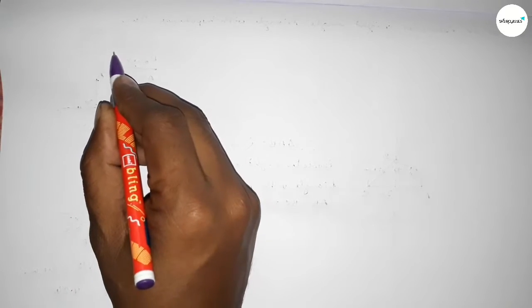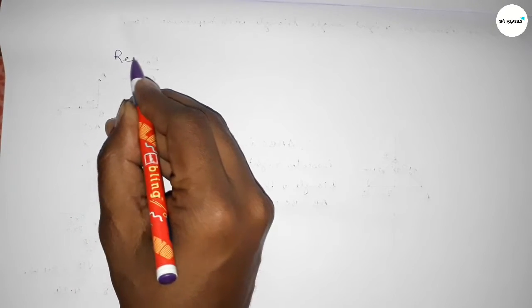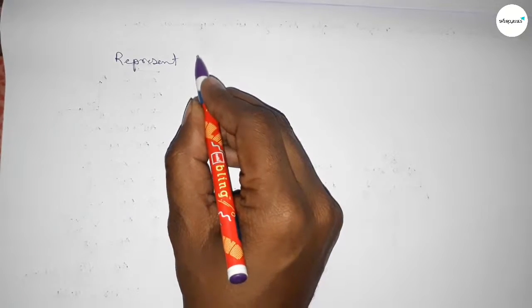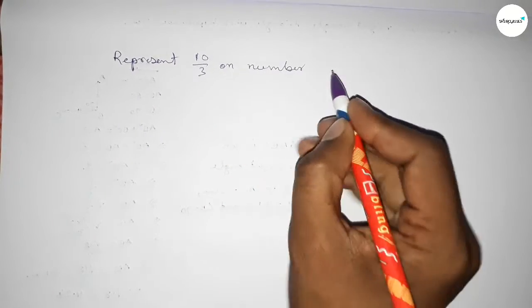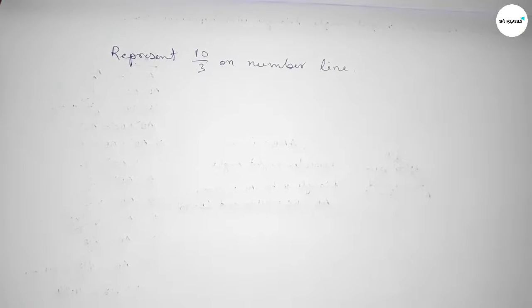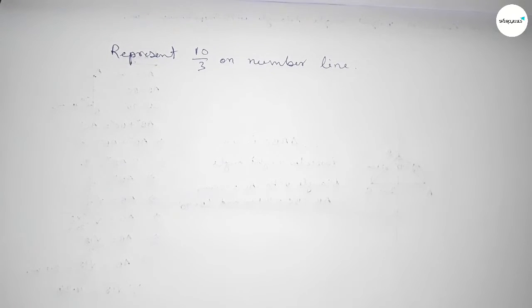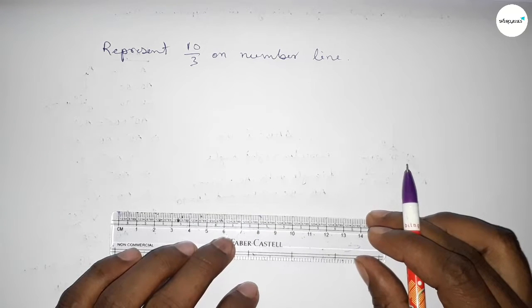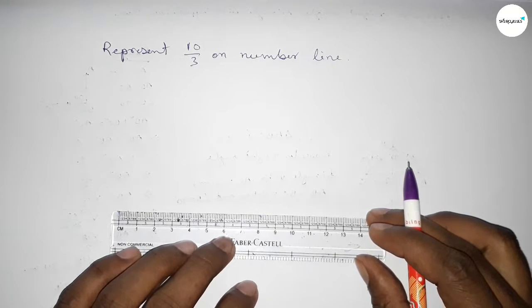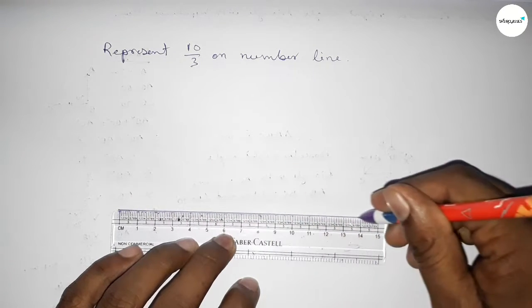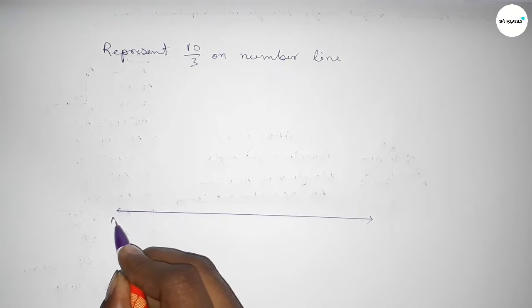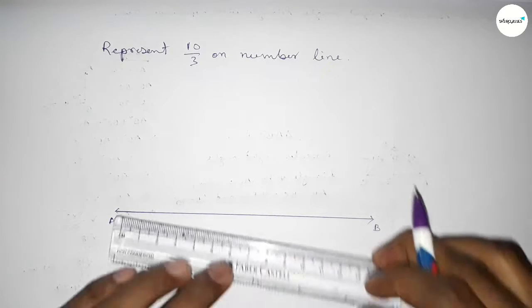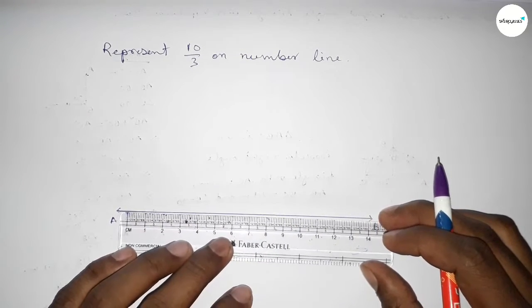Hi everyone, welcome to SAI Share Classes. Today in this video we have to represent 10 over 3 on a number line. First, we draw a line of any length, taking arrow marks on both sides — this is our number line.